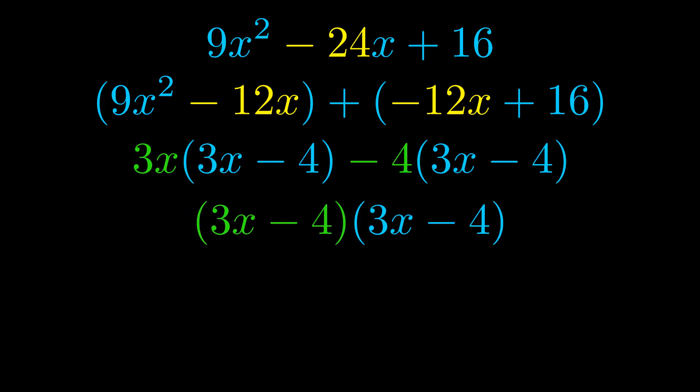Notice also how what remains inside of the parentheses is the same in both cases. The blue values are the same. Those blue values will become one of our factors and we will combine the two green values, the GCFs that we pulled out to get the other one. And that is our fully factored equation.